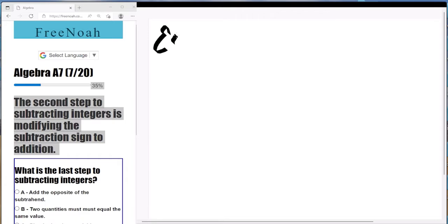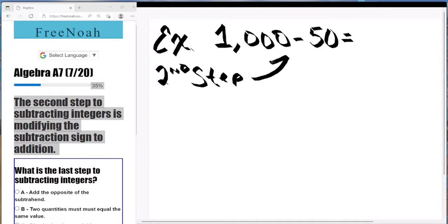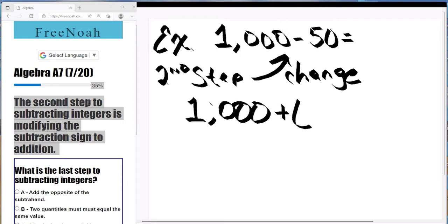Let's give you a clarification here. So, example: 1,000 minus 50. The first step is we're going to leave 1,000 alone, and the second step is to change the subtraction sign once again to a positive sign. And so we're left with 1,000 plus negative 50.